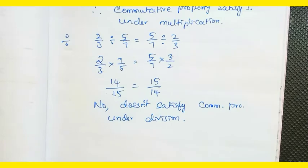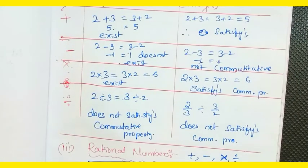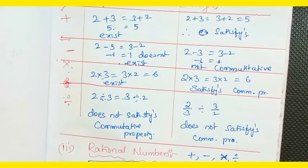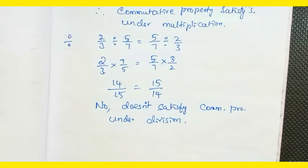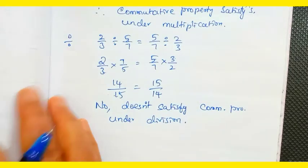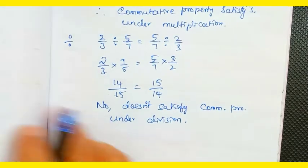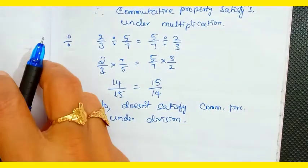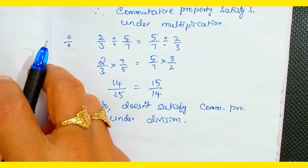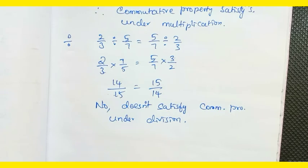Finally, in rational numbers, the commutative property is satisfied under addition and multiplication only. That's all for today's video. We will continue with the associative property in the next video. Thank you for watching.